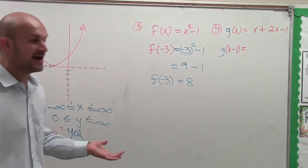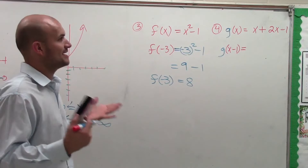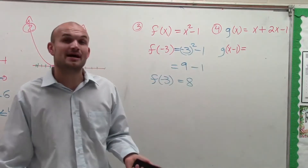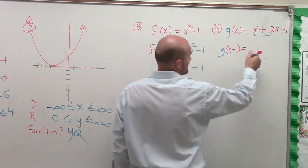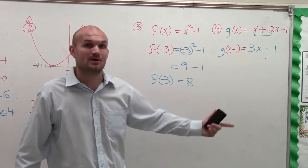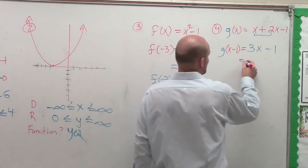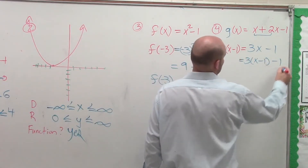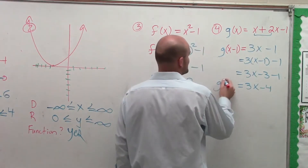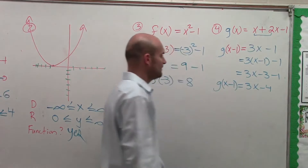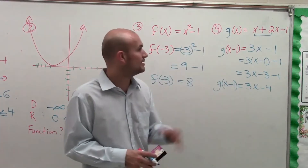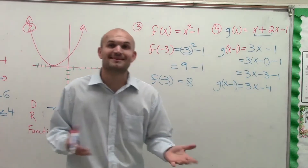Now for g of x: g of x equals x plus 2x minus 1. I want to evaluate for x minus 1. First, I can combine the two like terms to get 3x minus 1. Then, rather than plugging in x, I'm going to plug in x minus 1. So I replace x with (x minus 1): 3 times (x minus 1) minus 1. Using the distributive property, I get 3x minus 3 minus 1, which equals 3x minus 4. So the value of g at x minus 1 is equal to 3x minus 4.